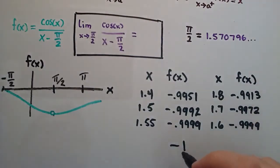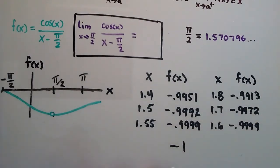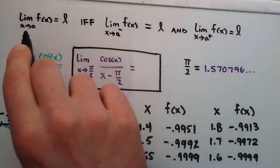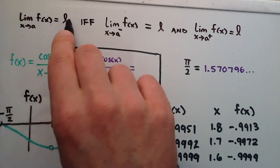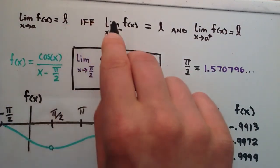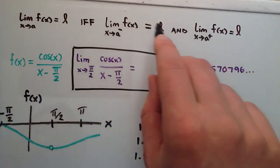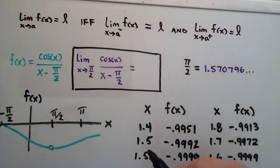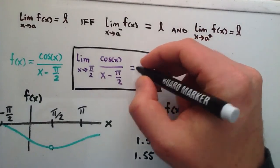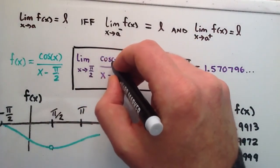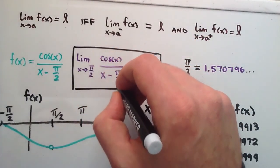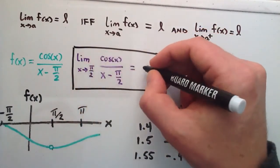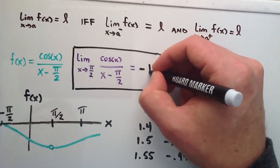Since the values from the left-hand side and the right-hand side are approaching the same value, because of this condition, we can say the limit is equal to that value. So the limit of our function cosine of x divided by x minus pi over 2, as x approaches pi over 2, is equal to negative 1.